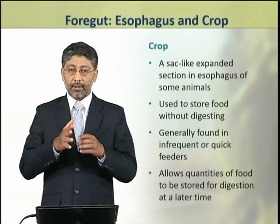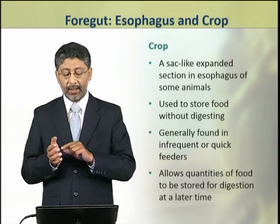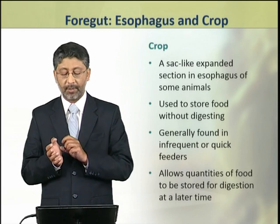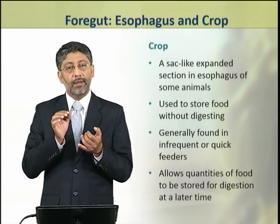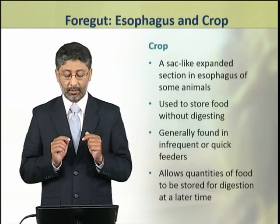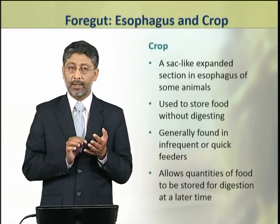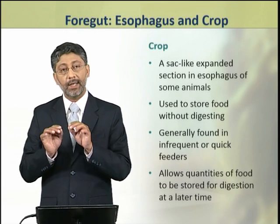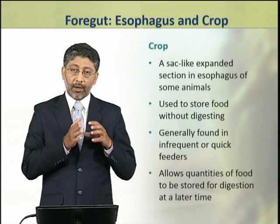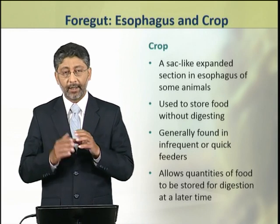The crop is a part of the foregut which is used to store food without digesting. It is generally found in animals which are either quick feeders or infrequent feeders. It allows quantities of food to be stored for digestion at a later time.